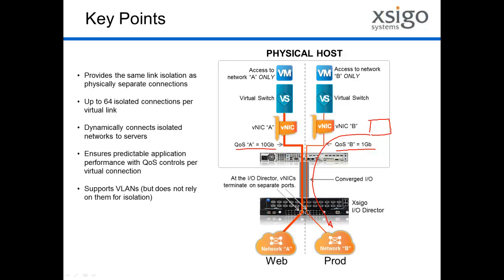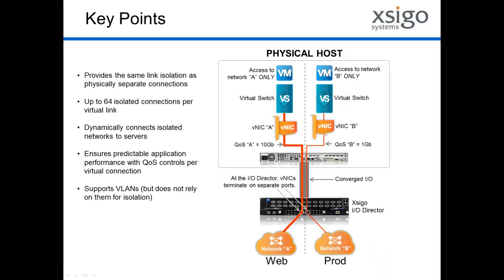SEGO also supports VLANs, which allow you to go from a single physical network to multiple virtual networks in your environment. Those VLANs are logically separate — they exist as separate Ethernet environments but run over a single physical environment, so they don't provide the full level of isolation of a physically separate network. Importantly, SEGO does not rely on VLANs for isolation. That mapping is done via the connection to a single port on the I/O director. So we support VLANs, but we don't rely on them to provide the isolation we deliver.